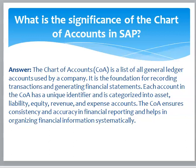What is the significance of the chart of accounts in SAP? Answer: The chart of accounts (COA) is a list of all general ledger accounts used by a company. It is the foundation for recording transactions and generating financial statements. Each account in the COA has a unique identifier and is categorized into asset, liability, equity, revenue, and expense accounts. The COA ensures consistency and accuracy in financial reporting and helps in organizing financial information systematically.